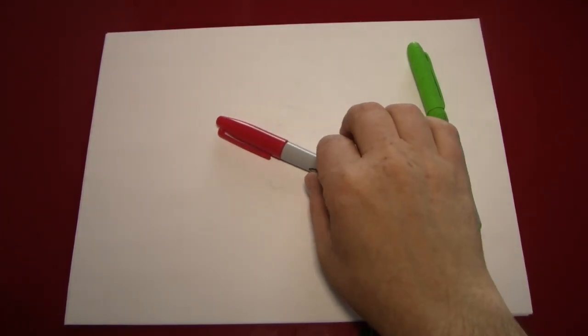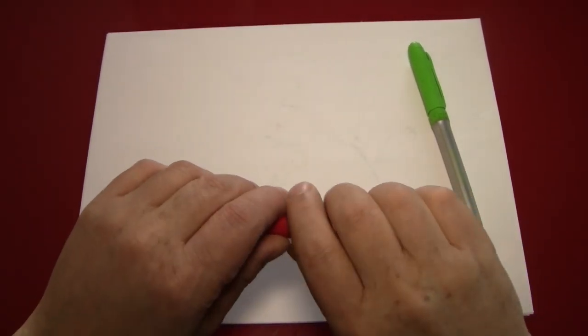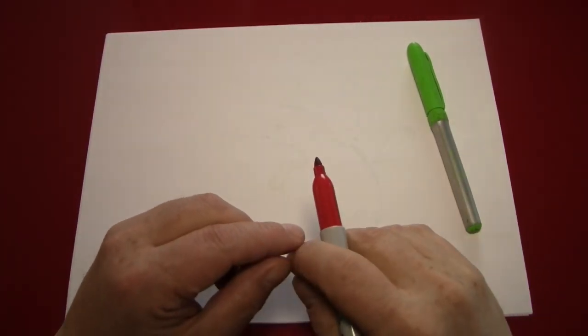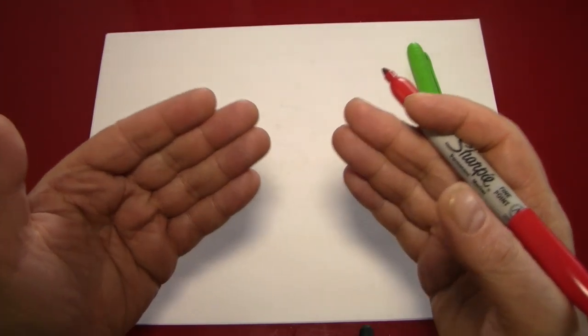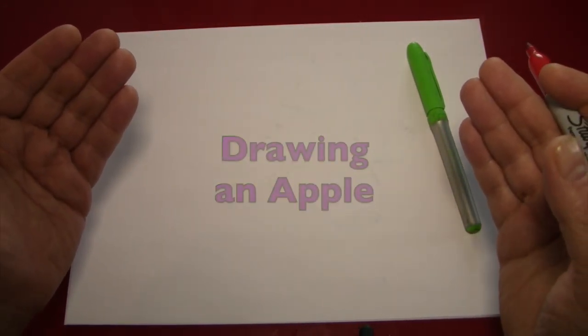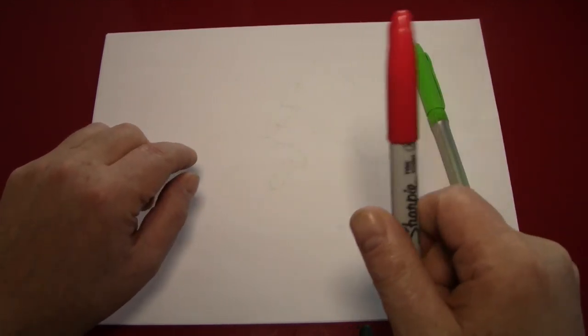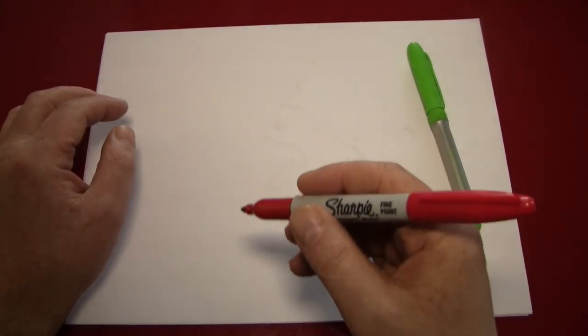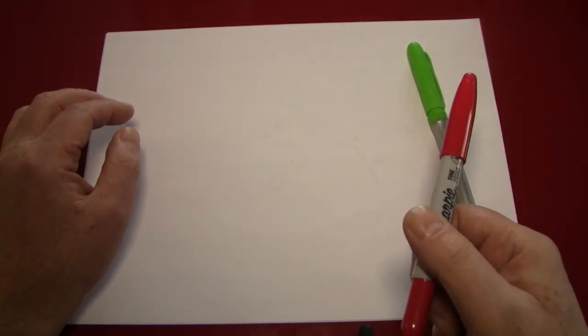Hello again, everybody. It's the Reverend Jay Goldstein, and welcome to another episode of Doodling with Reverend Jay. In today's episode, we're going to be drawing an apple, which is why I have two markers here today, a red marker and a green marker. We're going to be drawing a red apple with a green leaf.